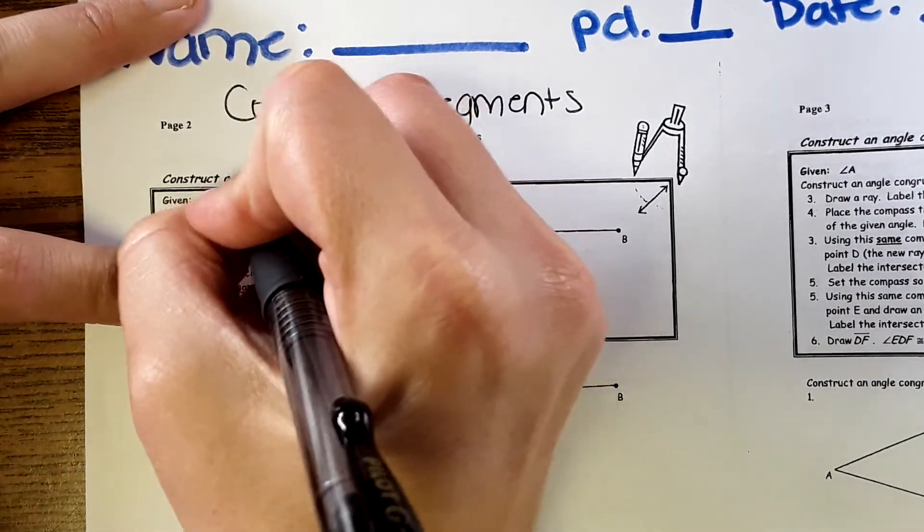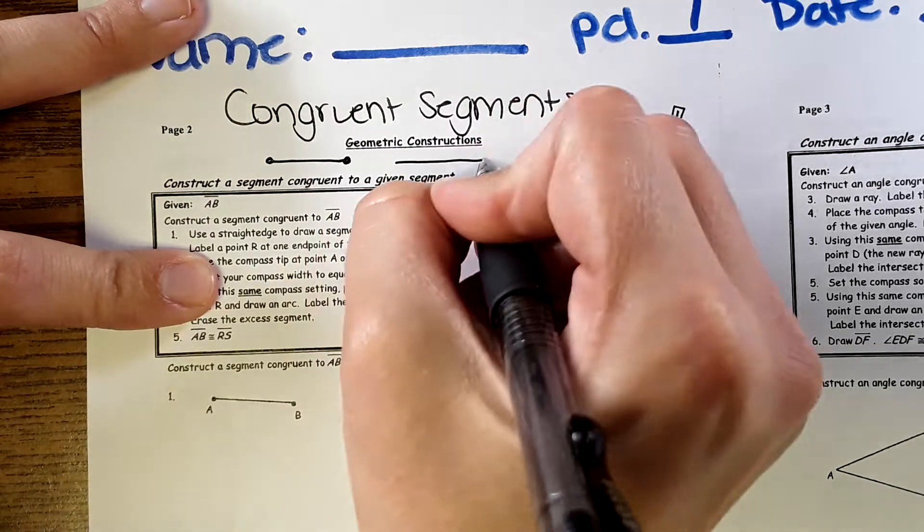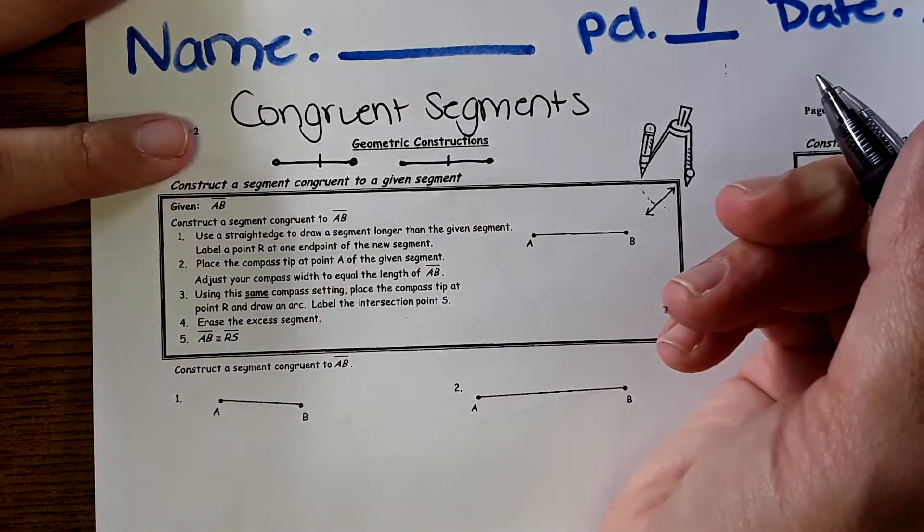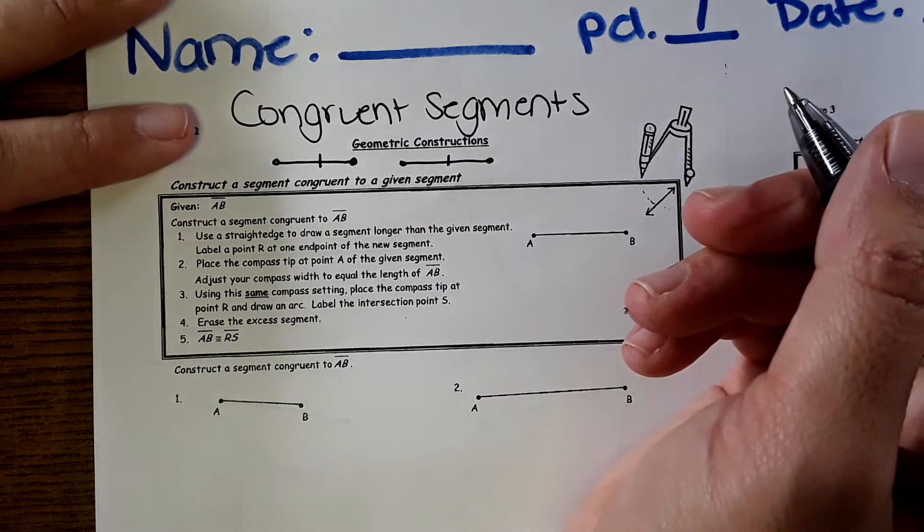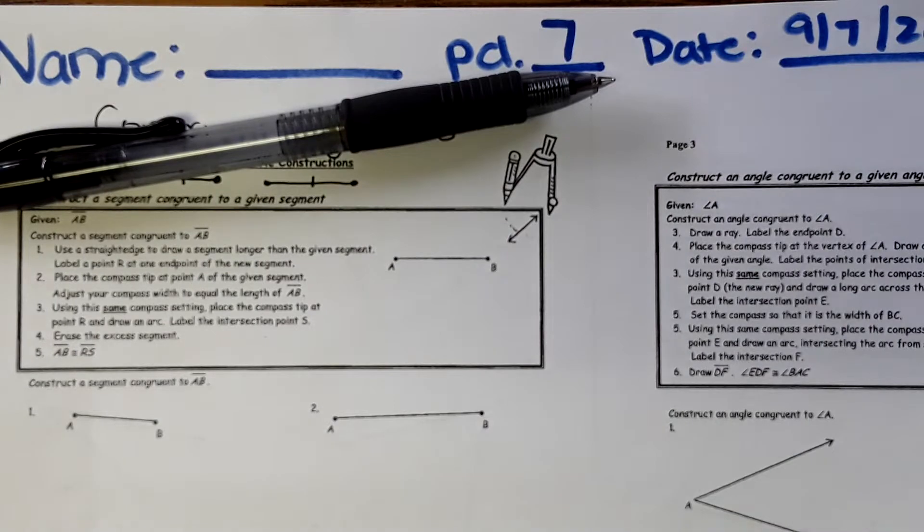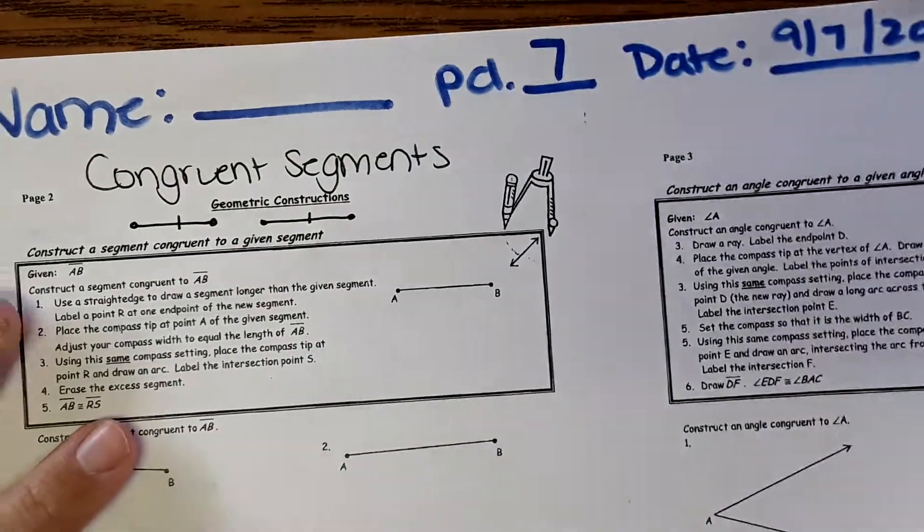Congruent means the exact same length or same size. So congruent segments would be the exact same length. This length would be the same as this, and that's what we're doing.